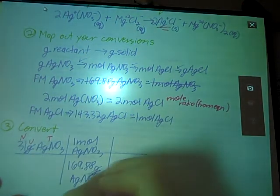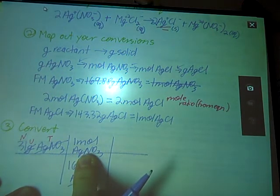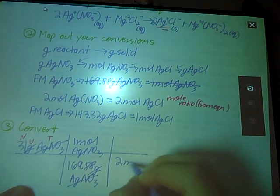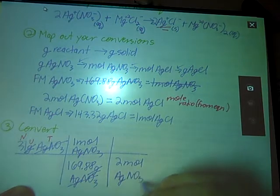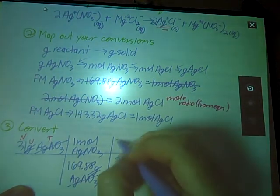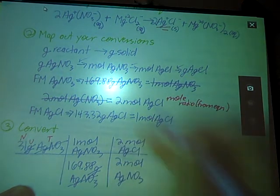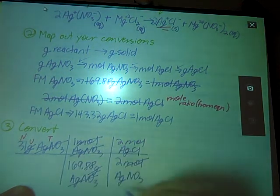Grams cancel, silver nitrate cancels. I'm in moles of silver nitrate. Next place that silver nitrate appears is here. Two moles silver nitrate. We used that piece. Other half goes on top. Two moles of silver chloride. Moles cancel, silver nitrate cancels.